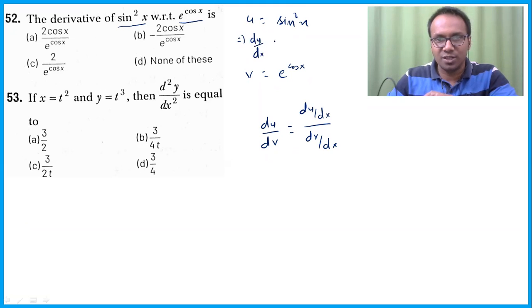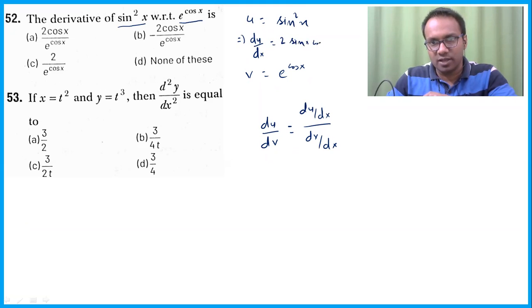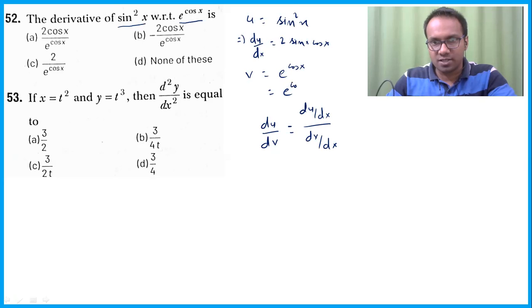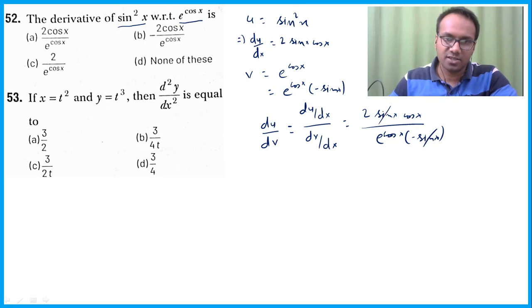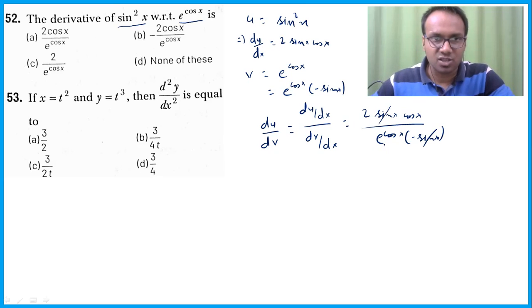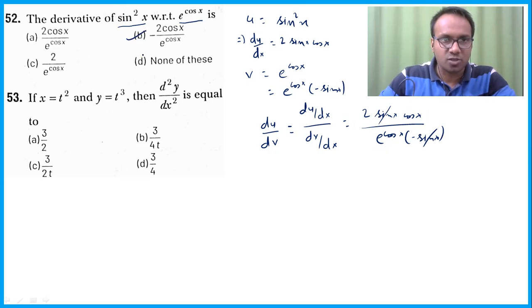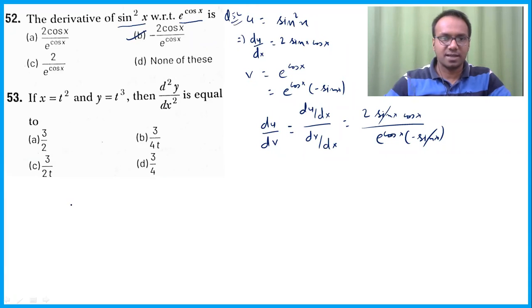So du/dx = 2 sin x · cos x (differentiating sin²x). For dv/dx: e^(cos x) differentiated gives e^(cos x) · (−sin x). So the answer is (2 sin x cos x) / (e^(cos x) · (−sin x)). The sin x cancels, giving −2cos x / e^(cos x). I think option B is correct. This should be easy for you.